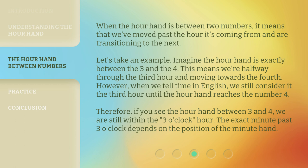However, when we tell time in English, we still consider it the third hour until the hour hand reaches the number four. Therefore, if you see the hour hand between three and four, we are still within the three o'clock hour. The exact minute past three o'clock depends on the position of the minute hand.